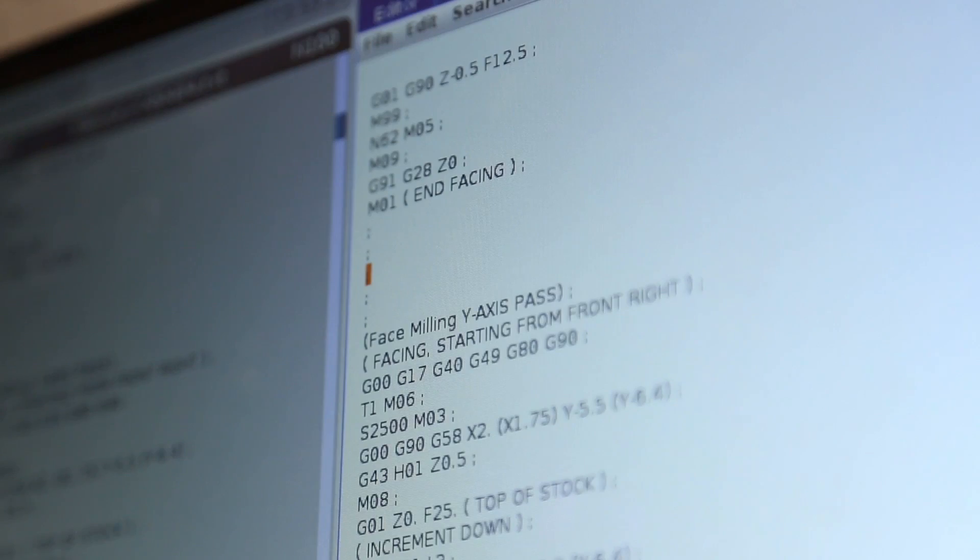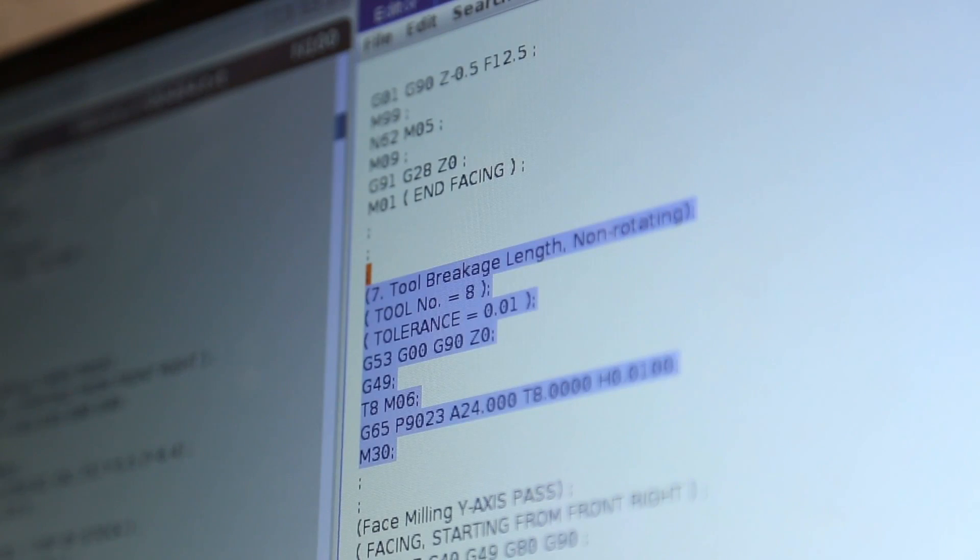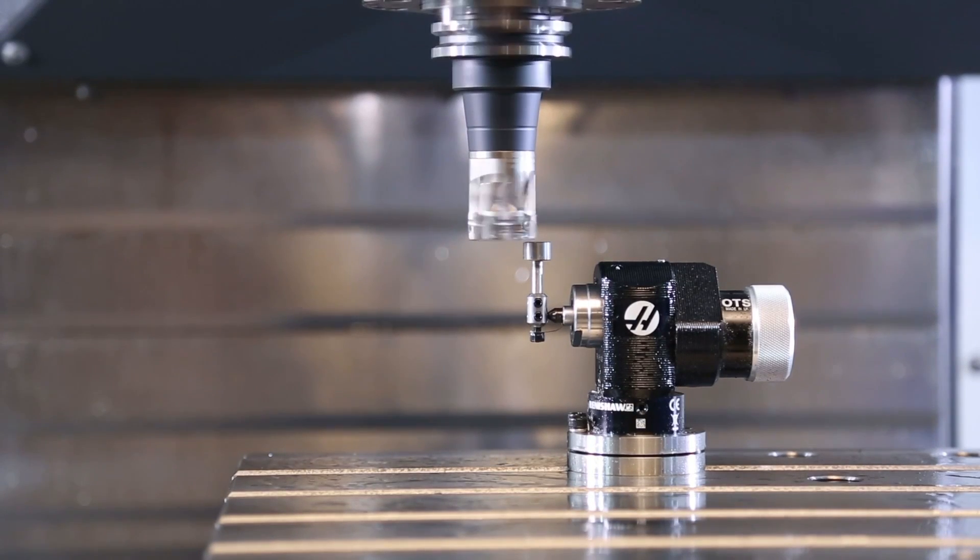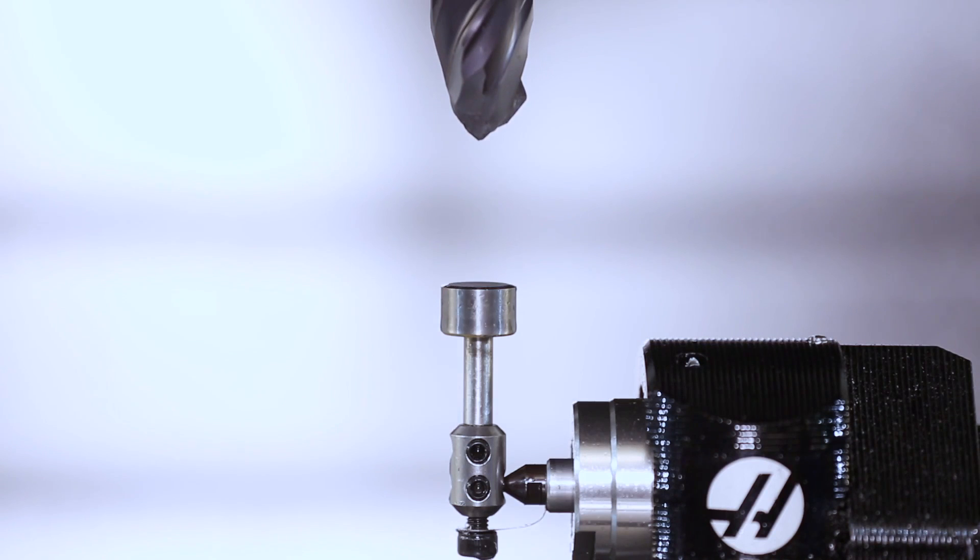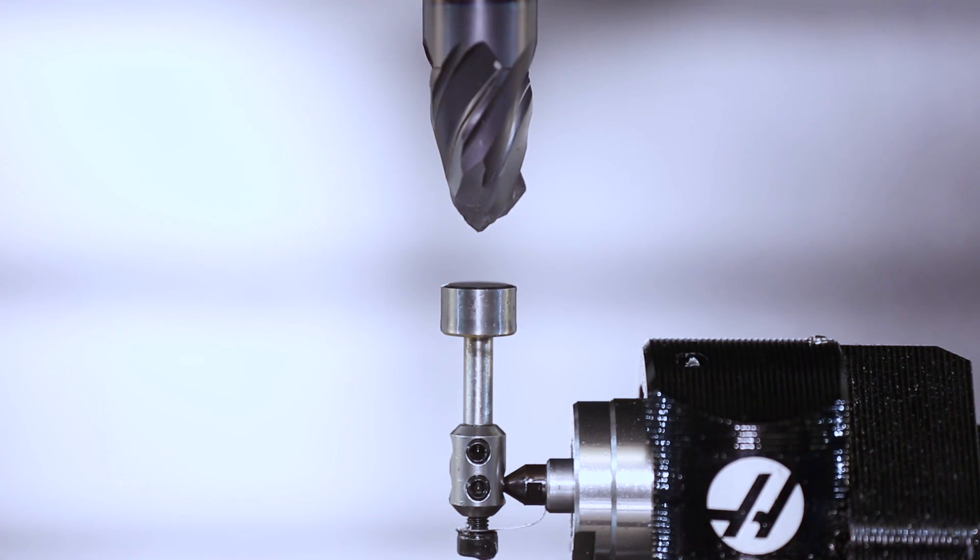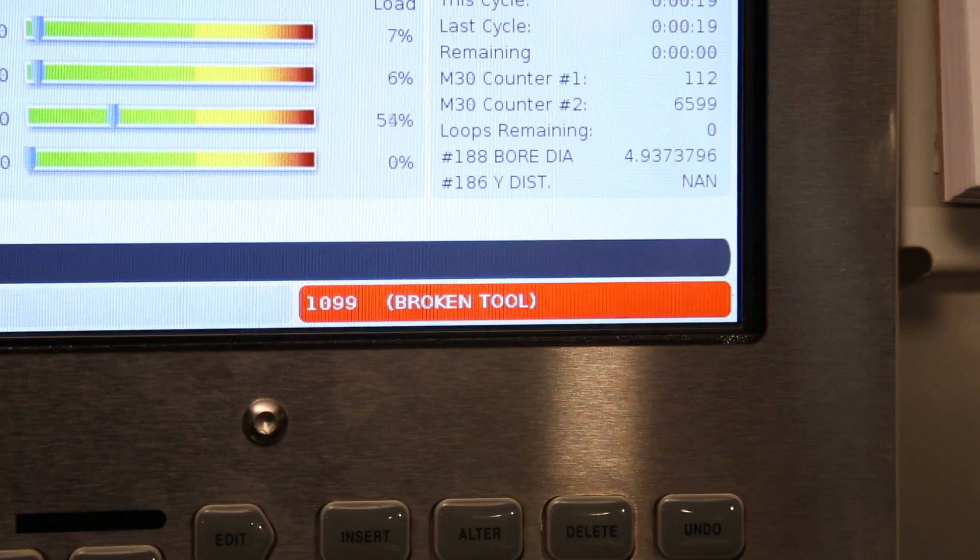Check for tool wear automatically from within your program. And how about tool breakage detection? Yep, WIPS has it. WIPS checks if your tool is broken before you get into trouble.